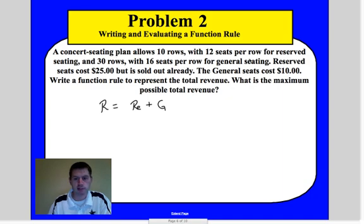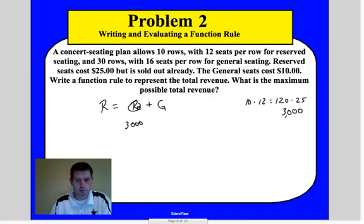The plan allows for reserve seats 10 rows at 12 seats per row. So that means we have 120 seats that we already got $25 for. So 120 times 25, we get $3,000. So we already gained $3,000 just from the reserve seats. Okay, so we already know that. So all I'm doing is pulling out the information we know. We're looking for the revenue. That was kind of the question.